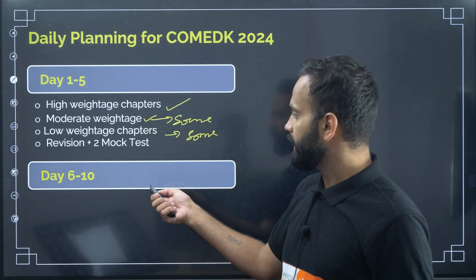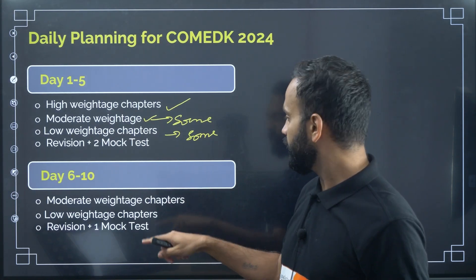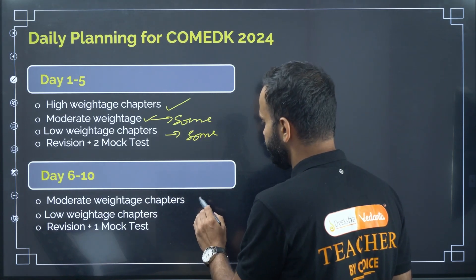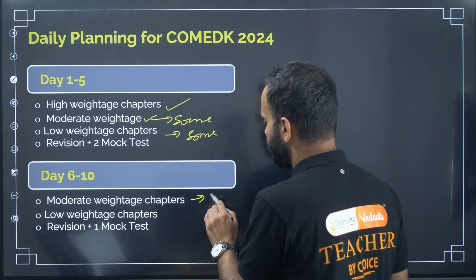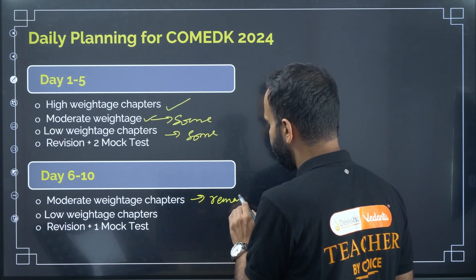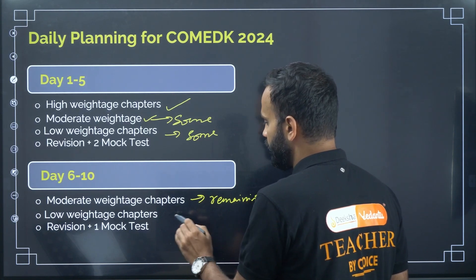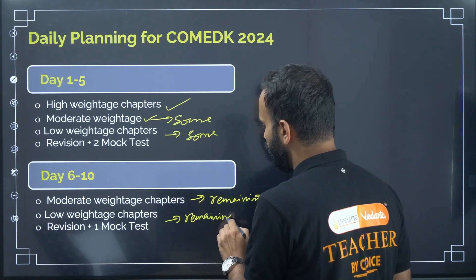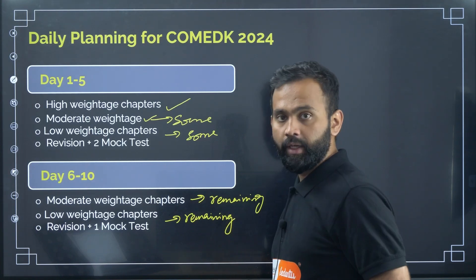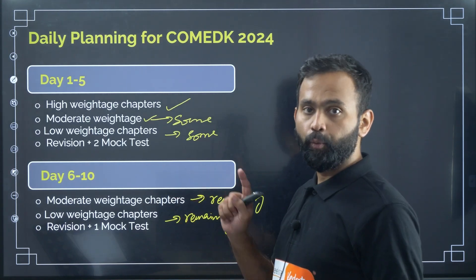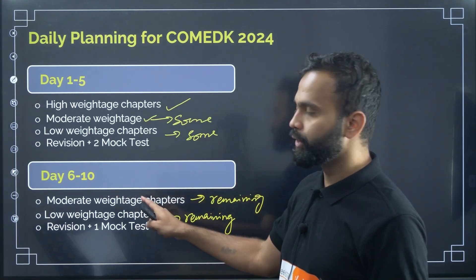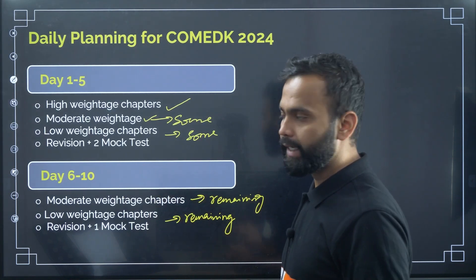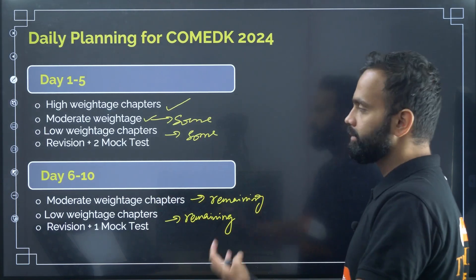In days six to ten, you will be completing the remaining moderate weightage chapters and remaining low weightage chapters. I have also put one high weightage chapter in days six to ten — that is the easier chapter, Semiconductor and Electronics.